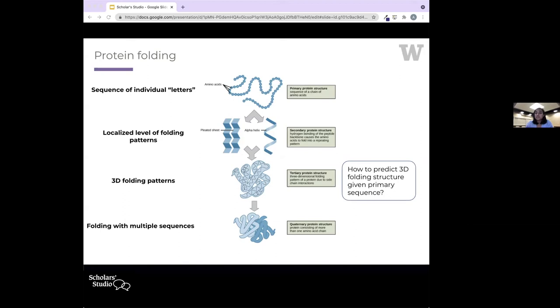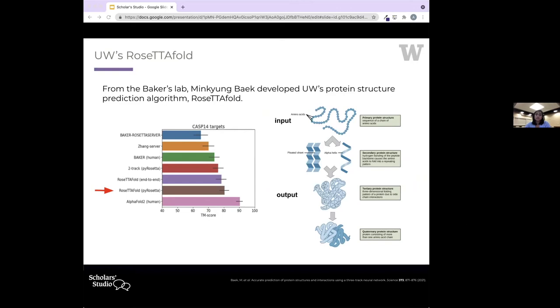I'll give a bit of background on protein 3D structure and protein folding. There are different levels of protein folding: the first one is sequence, which you can think of as a string of letters that make up words, followed by localized levels of folding, and finally 3D folding patterns. These 3D folding patterns can then interact with other proteins to create this final level of protein structure. What I'm focusing on is how we can take the first individual sequence of letters that make up these proteins and predict that 3D folding pattern.